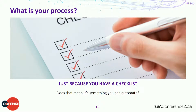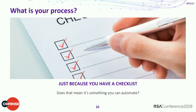Just because you have a checklist and a process you want to automate, is it something you really should automate? We still need checkpoints where human intuition reviews some of your alerts — especially your high-fidelity ones. You still need somebody to look at them and take time to investigate what's really going on.